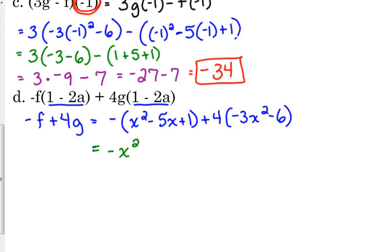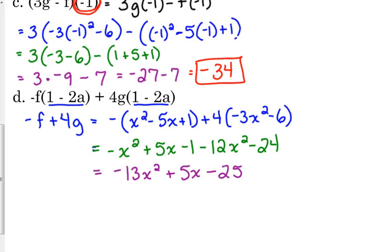So, we've got negative x squared plus 5x minus 1, minus 12x squared minus 24. Let's simplify, combine like terms, negative 13x squared plus 5x minus 25.